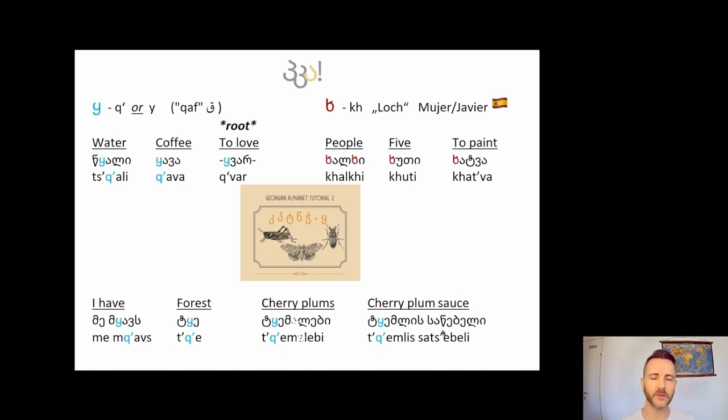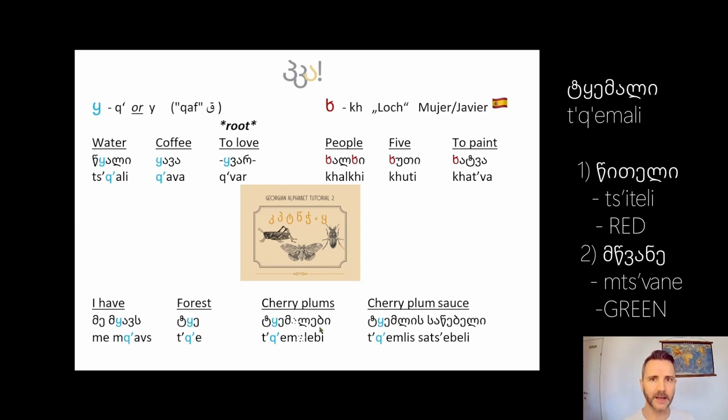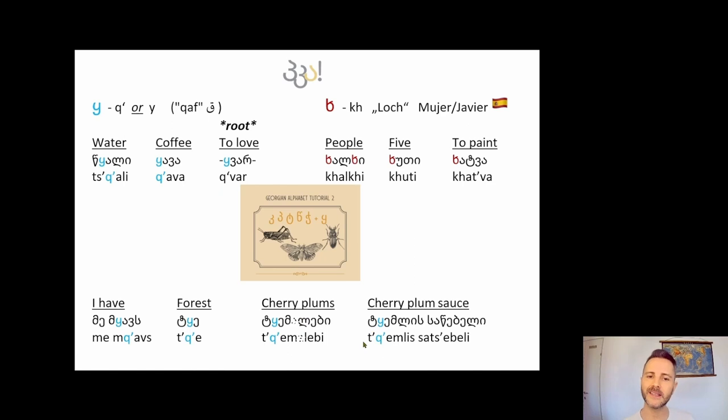These are three words which I want to put together because it's T-CH-E. T-CH-E is a forest, T-CH-E-M-L-E-B-Y are cherry plums which grow abundantly in Georgian. If you go to a Georgian restaurant, you can order T-CH-E-M-A-L-Y. Now T-CH-E-M-A-L-Y is absolutely delicious. It is a type of cherry plum sauce. You might see it in the long version, T-CH-E-M-L-Y-S T-CH-E-M-A-L-Y, simply just meaning sauce.